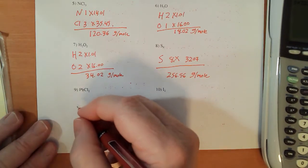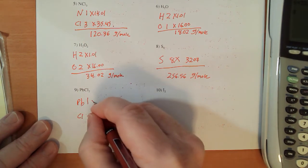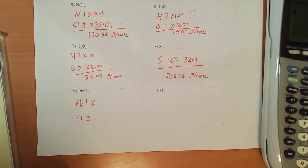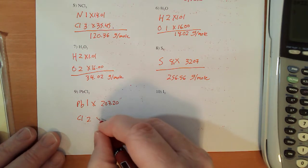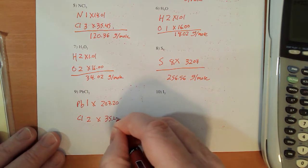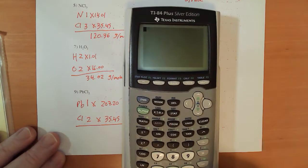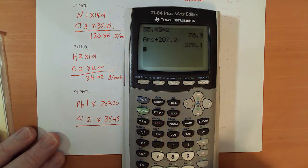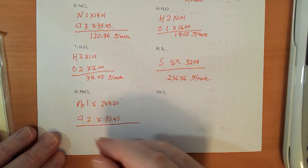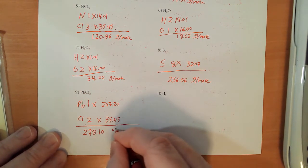Down here, lead, it's a heavy one. One lead, and for Pb, I'm getting 207.20, and for chlorine, 35.45. So 35.45 times 2 plus 207.2, and that gives me 278.10 grams per mole.